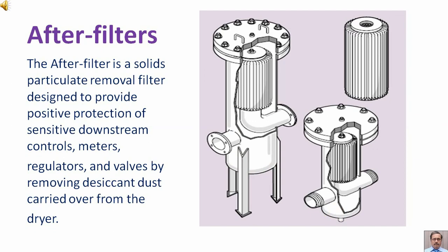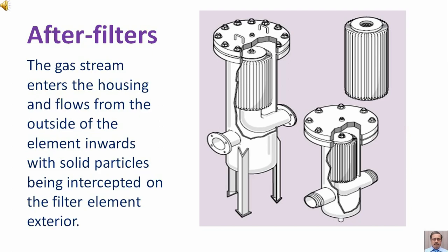The after-filter is a solid particulate removal filter designed to provide positive protection of sensitive downstream controls, meters, regulators, and valves by removing desiccant dust carried over from the dryer. The gas stream enters the housing from the outside of the element inwards, with solid particles being intercepted on the filter element exterior.